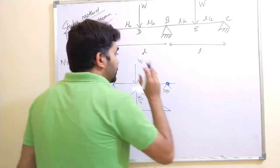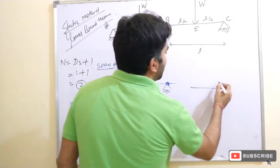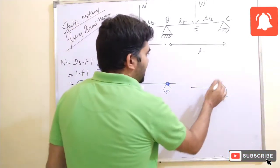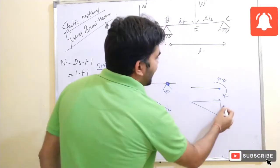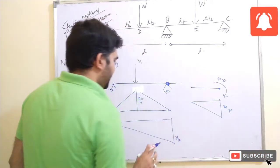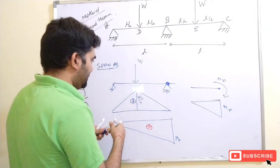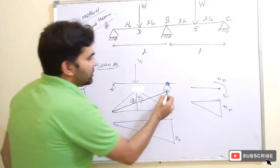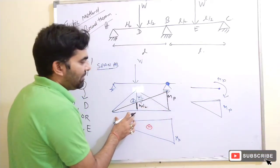Due to the plastic hinge developed at point B, the plastic moment MP is developed at point B, causing a hogging bending moment of value MP. This is negative, and the free bending moment is positive. After overlapping the diagrams, we get: for length L the value is MP, and for length L by 2 the value is MP by 2.